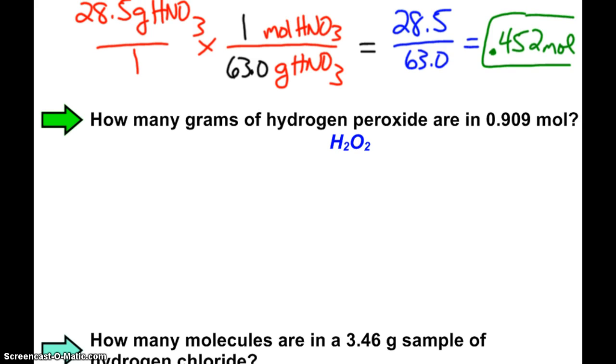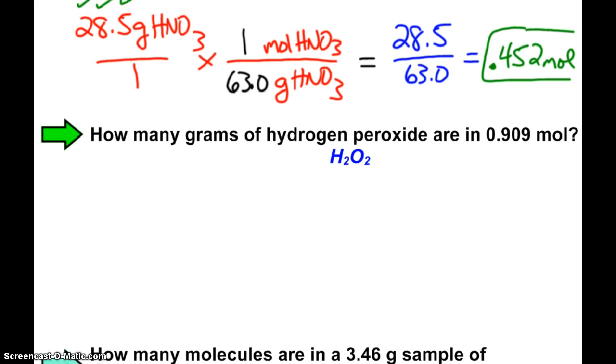How many grams of hydrogen peroxide in 0.909 moles? Again, I can do dimensional analysis. If I have 0.909 moles of hydrogen peroxide, H2O2,